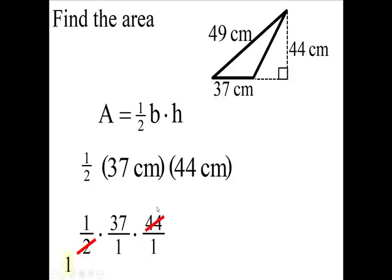Now centimeter times centimeter, we write that as centimeter squared, or we say square centimeters. So we end up with 814 square centimeters as the area of the triangle.